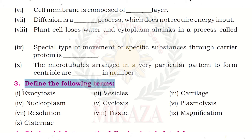Next, we will cover the definitions. There are 10 definitions: exocytosis, vesicles, cartilage, nucleoplasm, cyclosis, plasmolysis, resolution, tissue, magnification, and cisternae. These are the 10 terms of chapter number four.